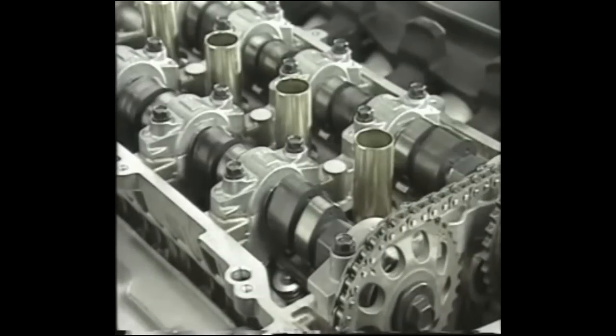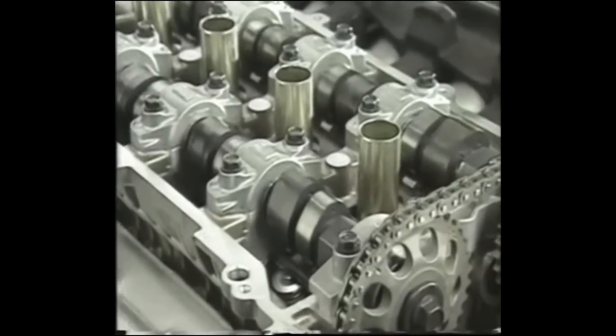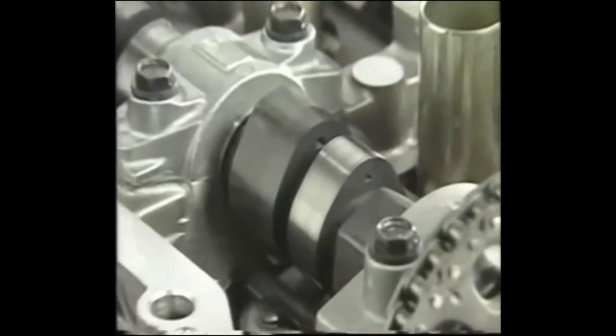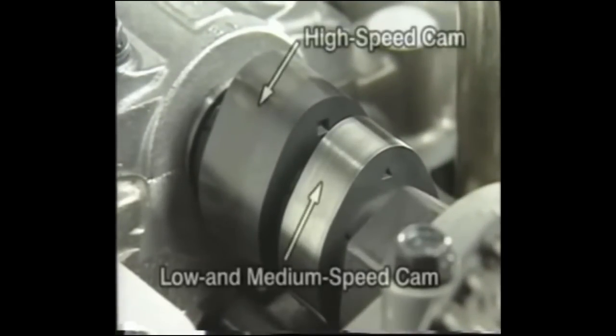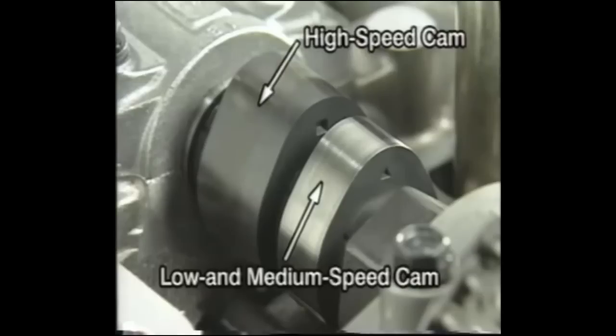Two types of cams, one for low to medium speed and the other for the high-speed range, are placed next to each other on the camshaft. In this system, the cams are used interchangeably depending on engine speed.